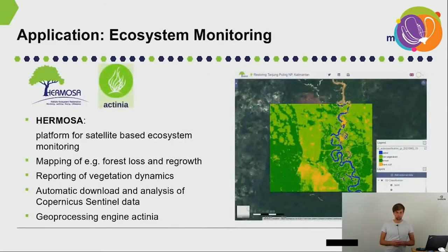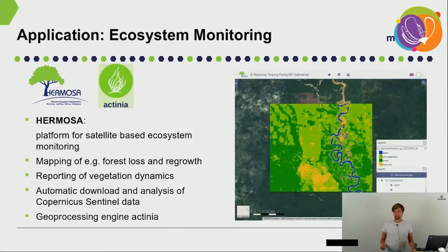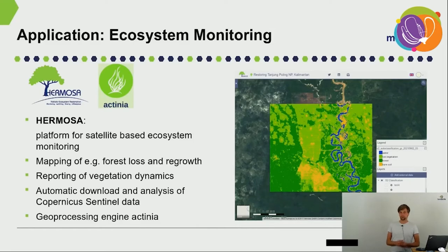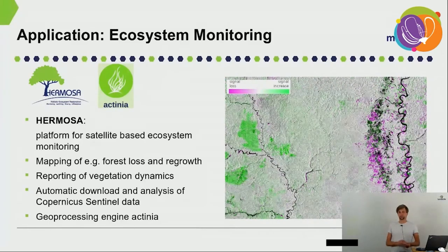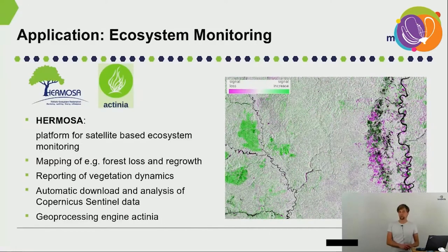Another example is the HAMOSA project, also presented here at FOSS4G in a dedicated presentation. HAMOSA is a platform for satellite-based ecosystem monitoring, with the goal of enabling local projects committed to ecosystem restoration to monitor their effort and progress using Earth observation data and potentially link this to investors. HAMOSA comes with a set of functions for using Sentinel data to assess the local state of an ecosystem — for example, simple land cover classification or more complex analysis like vegetation dynamics through time, visualized using Sentinel-1 time series data. At the backend of HAMOSA lies the geoprocessing engine Actinia, which is also featured in a dedicated talk here at FOSS4G.